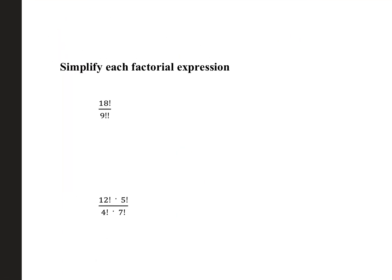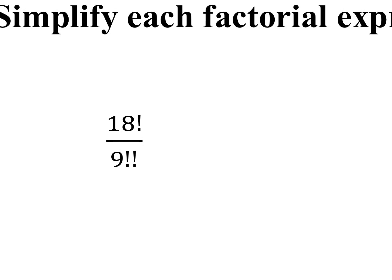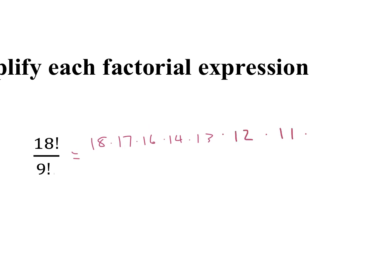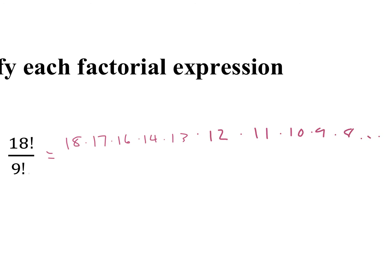Looking at simplify each factorial expression — number 9 has two exclamation points but that was just a typo, so there's not going to be one with two exclamation points. A factorial is when you multiply that number and down. So here we have 18 times 17 times 16 times 14 times 13 times 12 times 11 times 10 times 9 times 8, and so on.